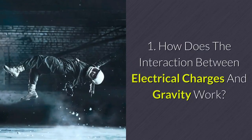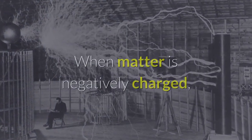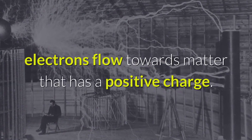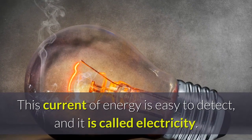How does the interaction between electrical charges and gravity work? When matter is negatively charged, electrons flow towards matter that has a positive charge. This current of energy is easy to detect, and it is called electricity.